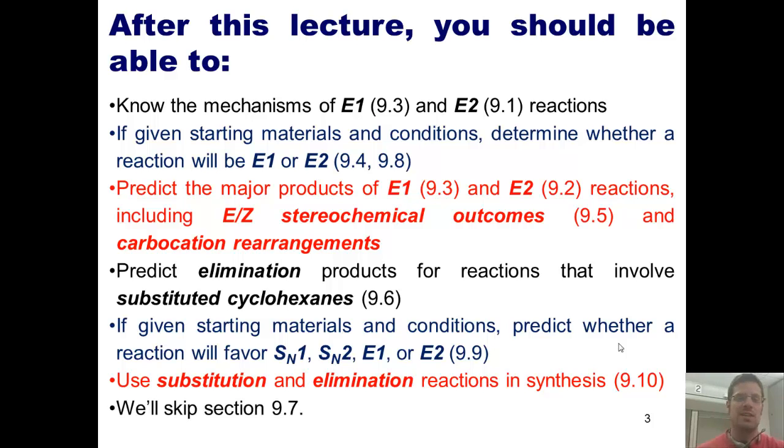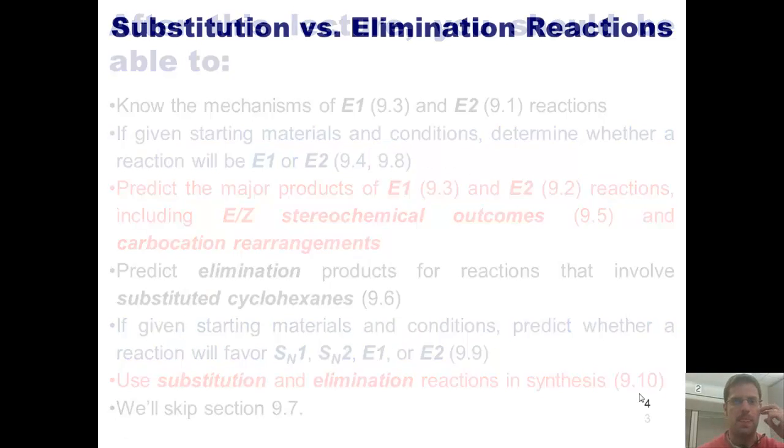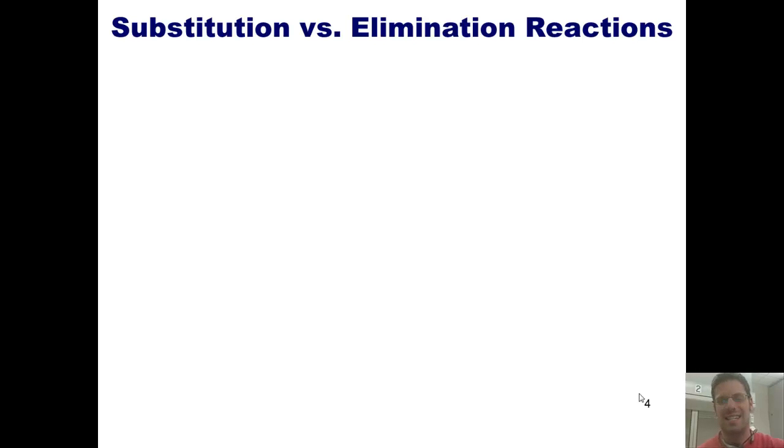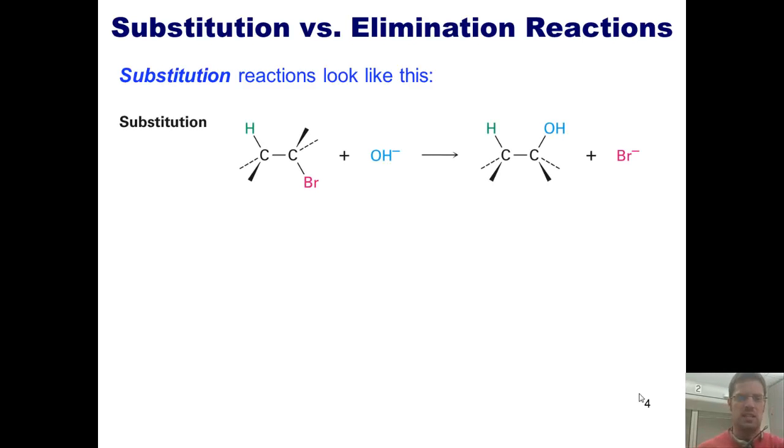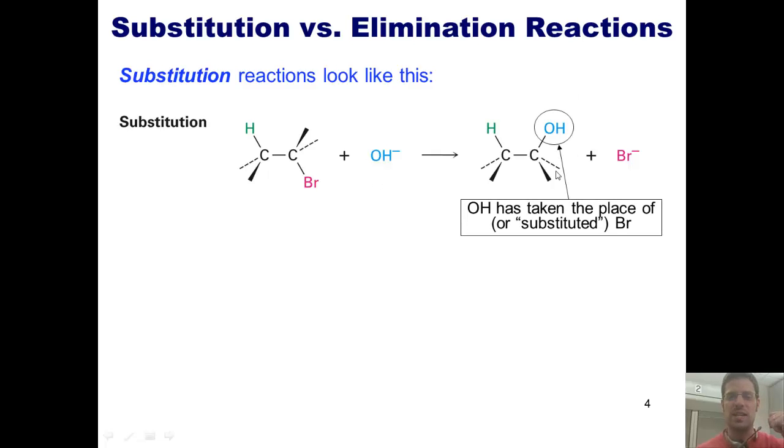Now, please note we will skip section 9.7 from our text. Please also note that each of these different topics I've outlined are discussed in our text in the sections that are written here. So as we discussed in our last series of lectures from chapter 8, substitution reactions look like this. There's some kind of leaving group, in this example a bromine, which takes off and then gets replaced by a nucleophile, in this case a hydroxide. Thus we can say that the OH has taken the place of or substituted itself for the bromine.